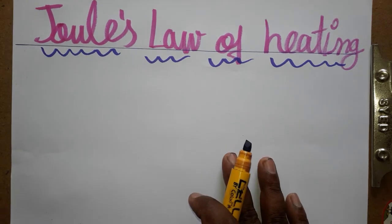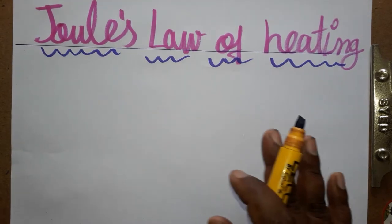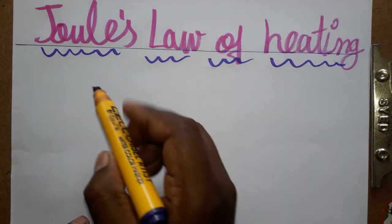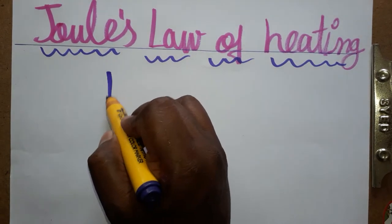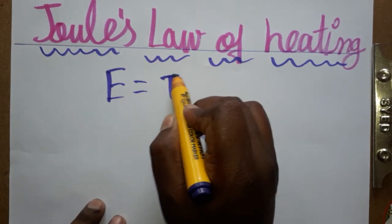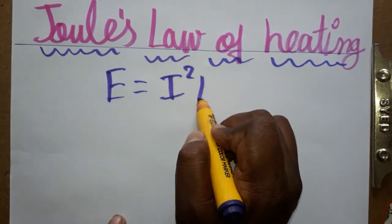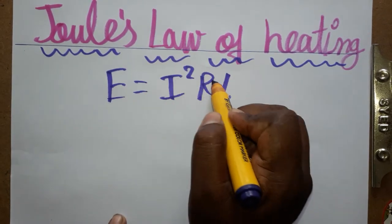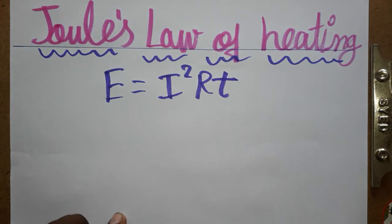Students, today we are going to learn how to derive Joule's Law of Heating — that means energy is equal to I squared R T. This is the equation we are going to learn how to derive.